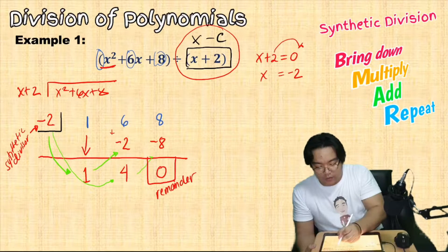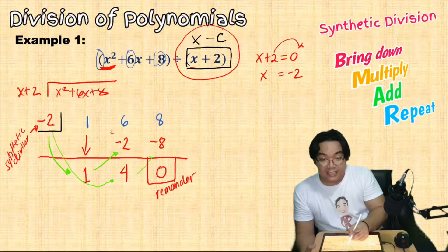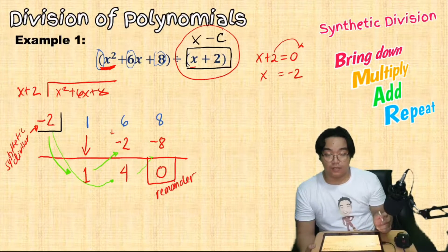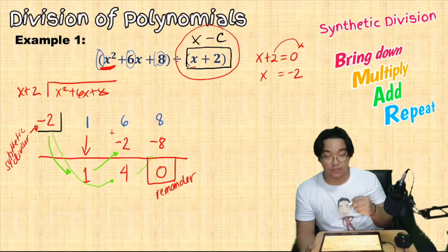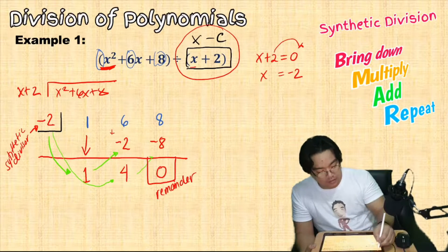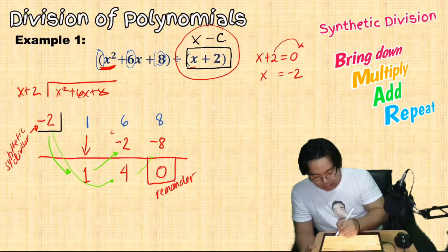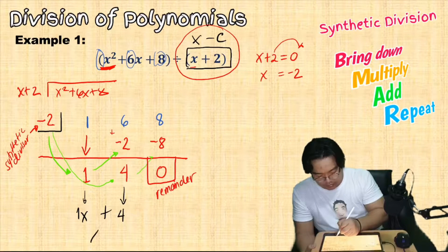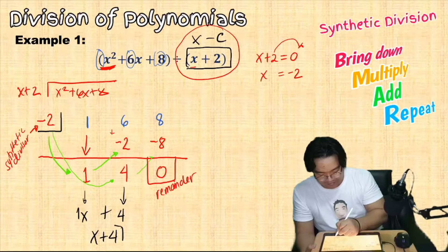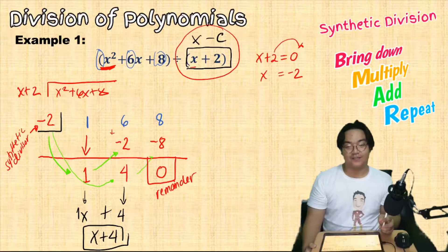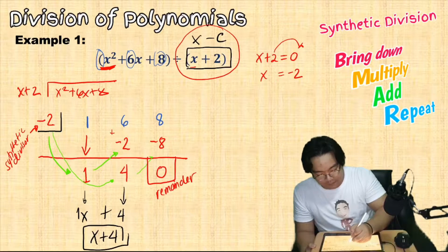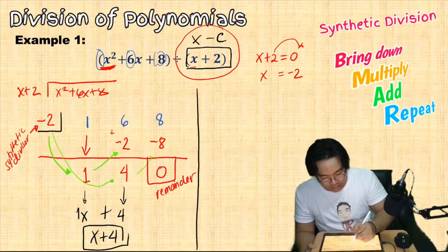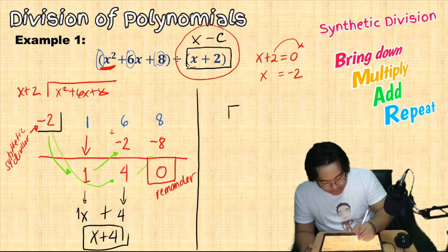Since we're dividing a quadratic polynomial by a linear polynomial, the quotient is one degree lower. So our quotient is 1x plus 4, or simply x plus 4. That's easier than long division!